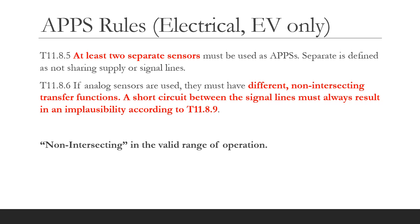Two different transfer functions must be used for the two APPS. The reason is that we want to detect a problem if the two APPS signal lines short together, in which case the monitoring circuit will receive two identical signal voltages. If the transfer functions were the same, they would both return the same scaled value in percent and the implausibility check would not work. But if we use different transfer functions that are sufficiently different to return more than 10 percent discrepancy, we will be able to diagnose the fault of the two signals becoming connected together.